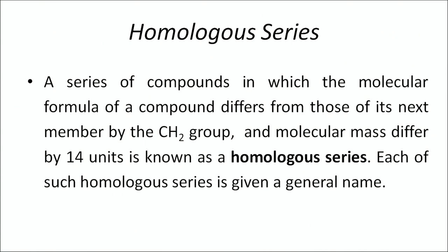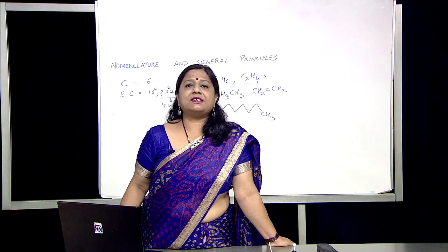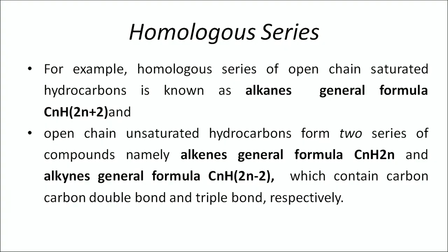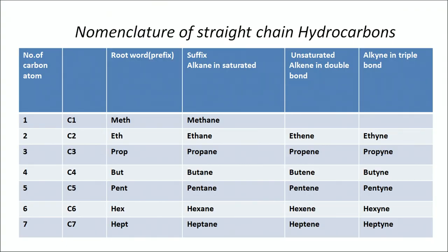Each homologous series is given a general name. For example, alkanes have the general formula CnH2n+2. Alkenes have CnH2n and alkynes have CnH2n−2. Let us see the table. When there is 1 carbon, we call it 'meth', which becomes the root word and is taken as a prefix.